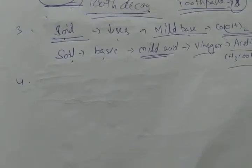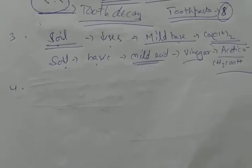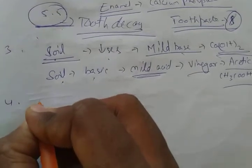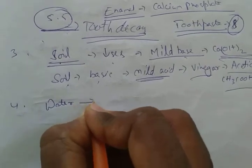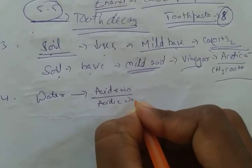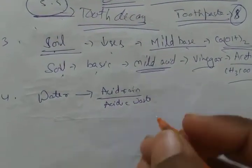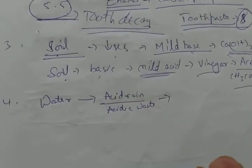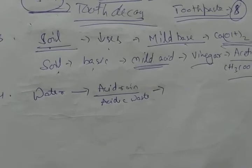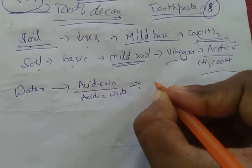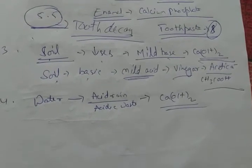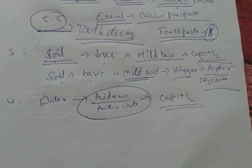This is also a problem for water bodies. Basically the pH of water is around 7, but sometimes acid rain or factories discharge acidic waste into water bodies, so water becomes acidic. If this happens, the pH will decrease and aquatic animals and plants may suffer and die. Here also we will use calcium hydroxide, a mild base, which will neutralize the effect of acid and bring the pH to normal state.